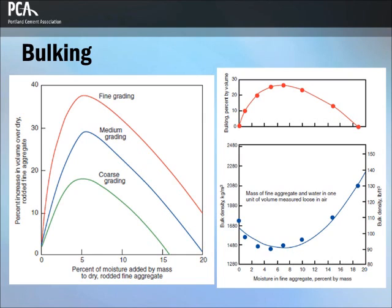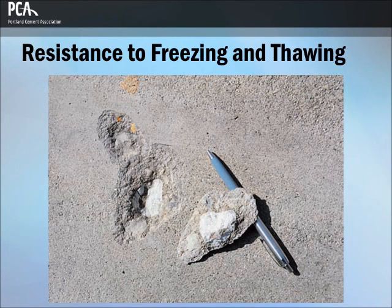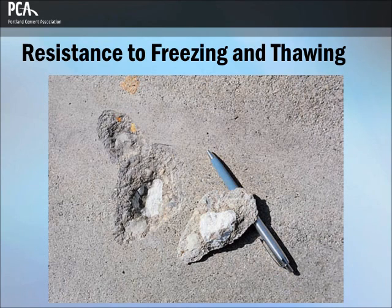Good practice has long favored weighing the aggregate and adjusting for moisture content when proportioning concrete. The frost resistance of an aggregate is related to its porosity, absorption, permeability, and pore structure. An aggregate particle with high absorption may not accommodate the expansion that occurs during the freezing of water if that particle becomes critically saturated.